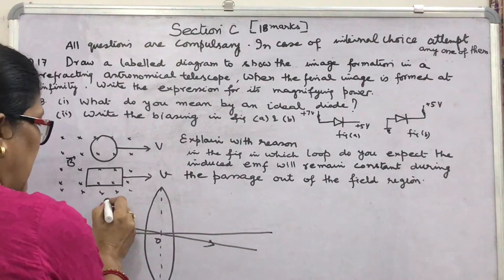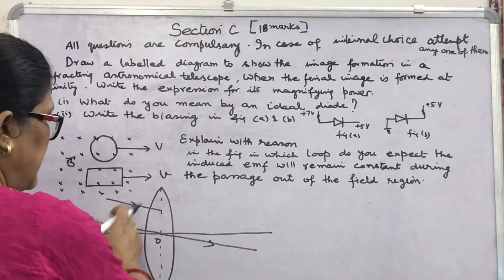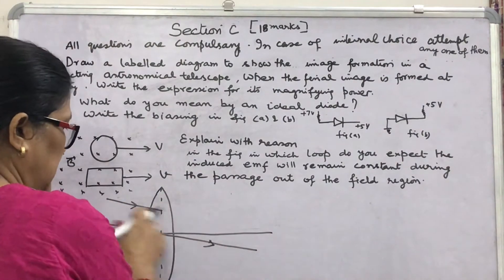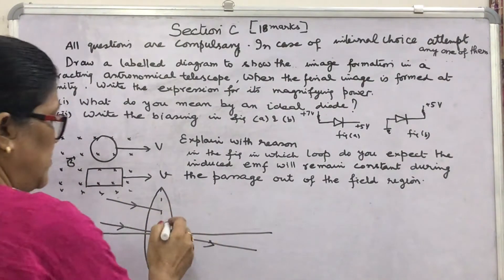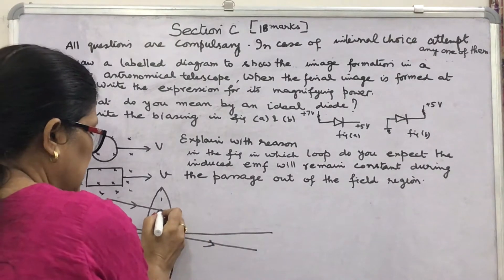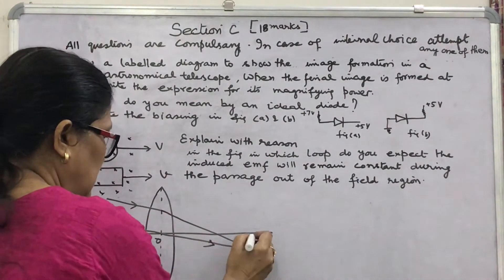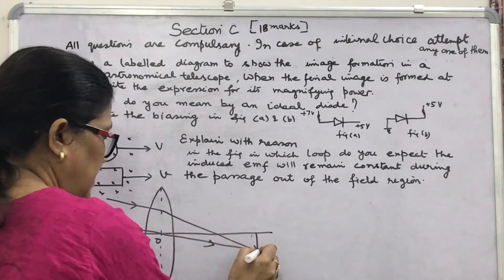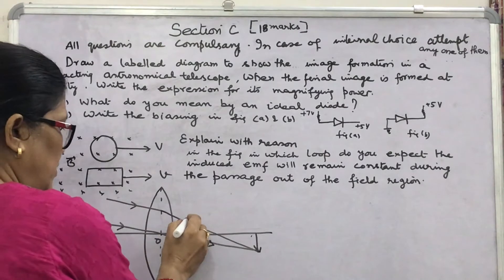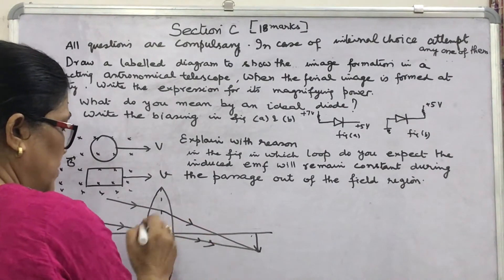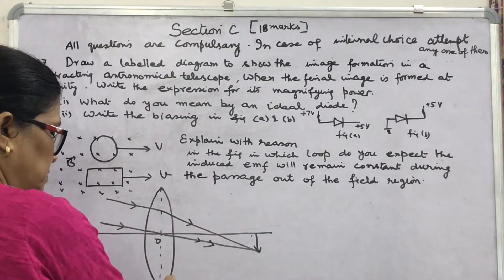Another ray parallel to it — as the rays are coming from infinity, they are supposed to be parallel to each other. I will take only two rays to form the image. This ray will be converged and the image is formed somewhat here — this is the inverted image of the object at infinity. Don't forget to mark the arrow and also the labelling. This is the objective lens.